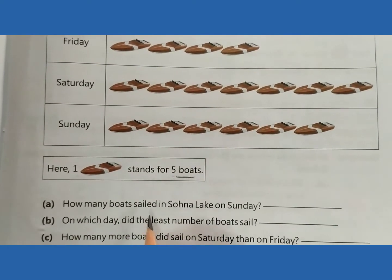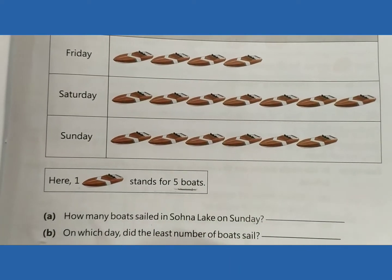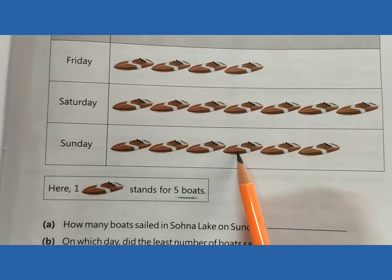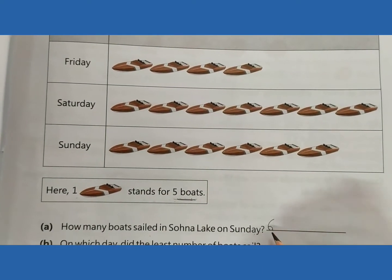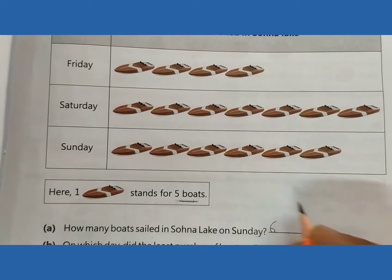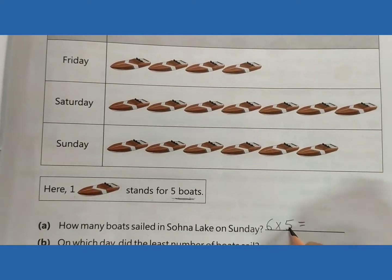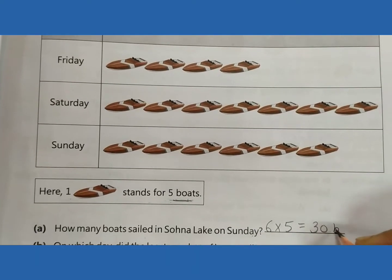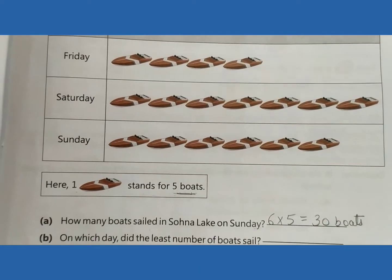How many boats sail in Sona Lake on Sunday? First, count the number of boats: 1, 2, 3, 4, 5, 6. But one boat stands for 5 boats, so multiply by 5. 6 multiplied by 5 equals 30 boats. This is the answer.